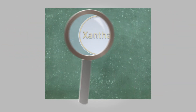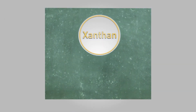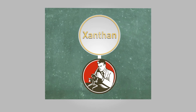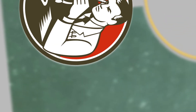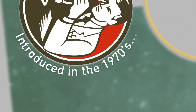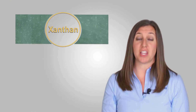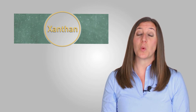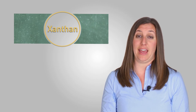Xanthan was discovered in the 1960s as scientists were attempting to create new food gums for commercial purposes. After its introduction to the food industry in the early 1970s, xanthan became a point of incredible interest for scientists and product developers and is widely used to this day.